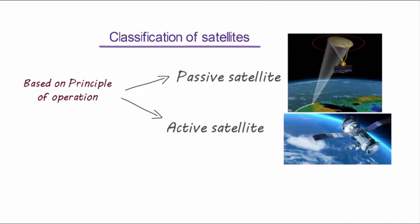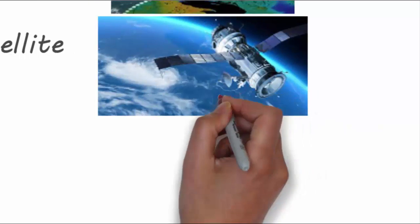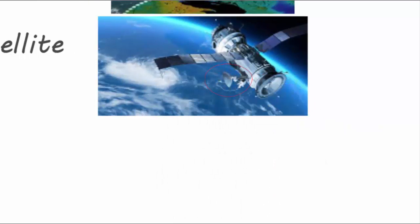The active satellites are the one which has transmitting equipment connected on it, such as transponder that receives signal from earth, amplifies it, then retransmits the signal back to earth.